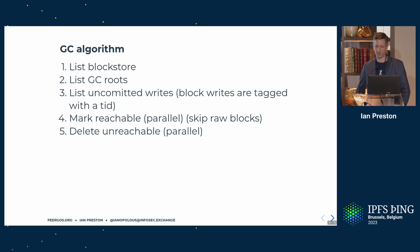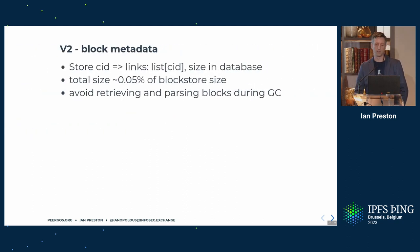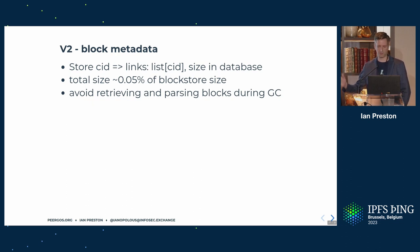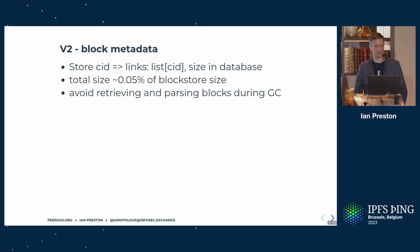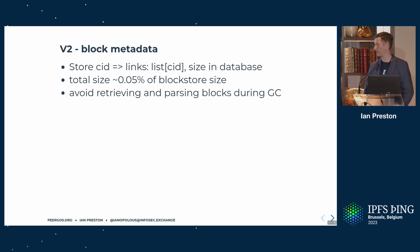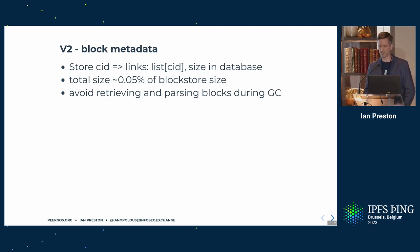We do the mark-reachable and delete phases in parallel — that got us down to the two-hour mark. The magic for the final version was storing a lookup from CID to the list of links in that block (plus size, since we track user storage usage). With just the links, you can do the mark-and-sweep without touching S3 at all. The overhead of this extra database is very small — 0.05% of total block store size — and you avoid having to retrieve and parse all the blocks during the mark phase. Basically everyone should have this kind of metadata store if you're doing anything involving DAG traversal.